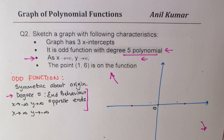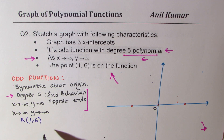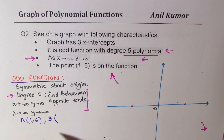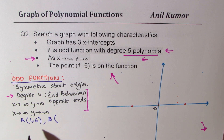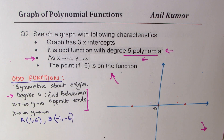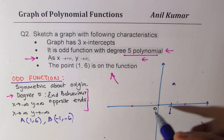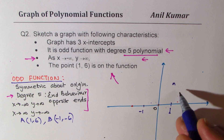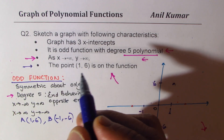Now let's look into another condition: the point (1, 6) is on the function. Since it is an odd function, we should have another point which is the mirror image. If at x equals one we have the point (1, 6), then at x equals minus one we should have (minus 1, minus 6). So we treat these as our turning points, which makes the function easier to sketch.